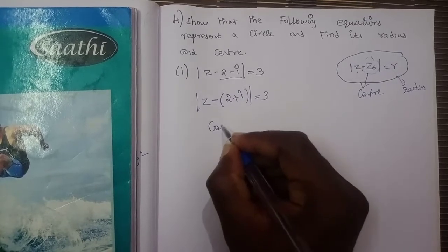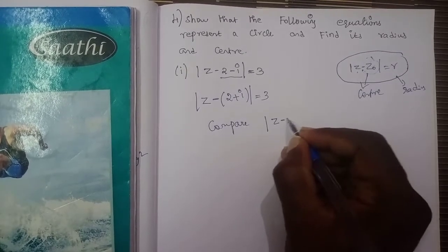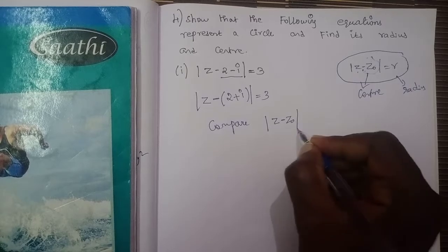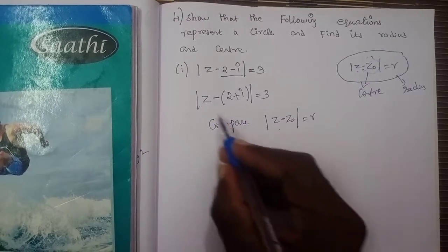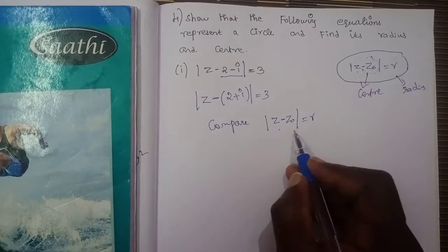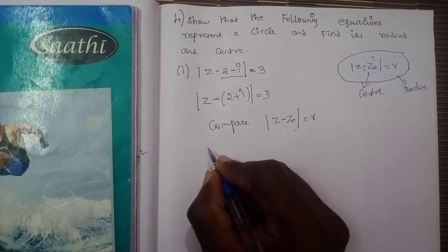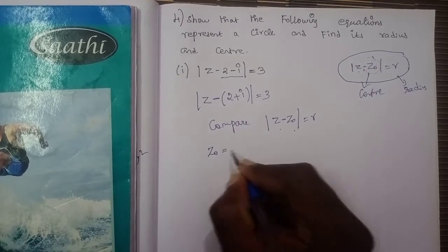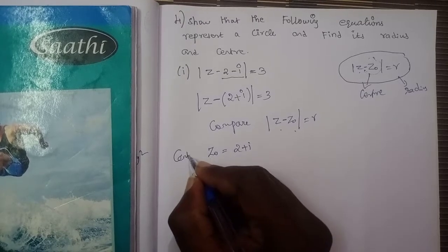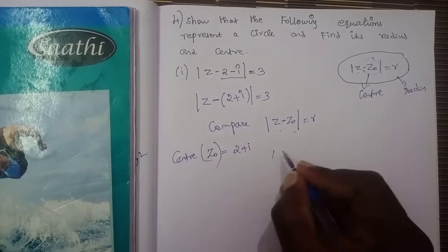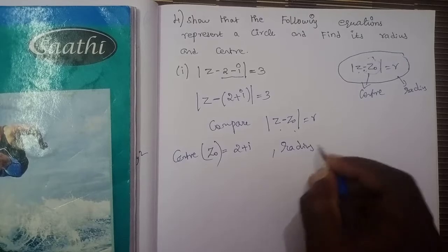Now we compare. Comparing with modulus of z minus z₀ equal to r: z₀ is equal to 2 plus i, which is the center. Radius is equal to 3.